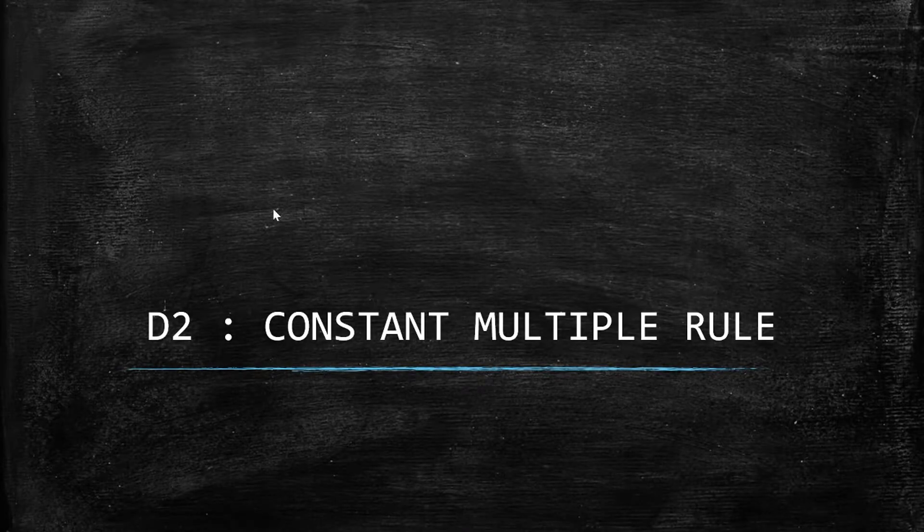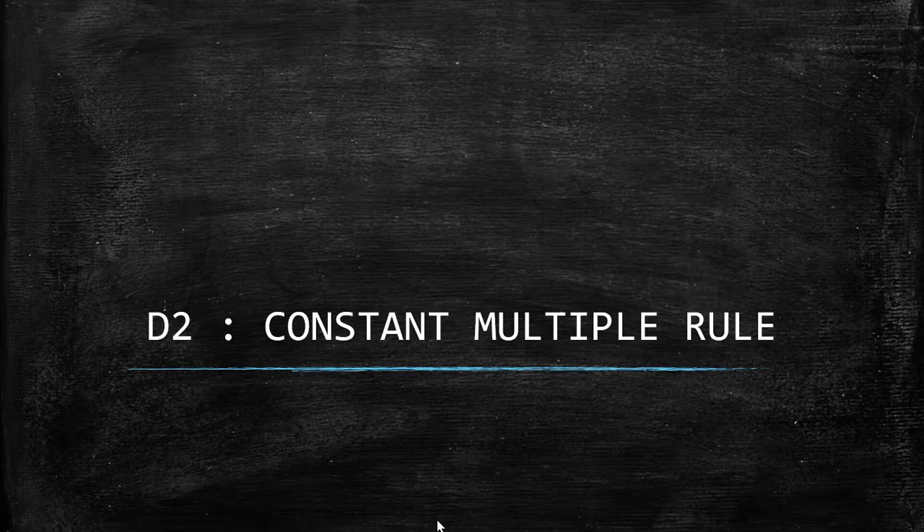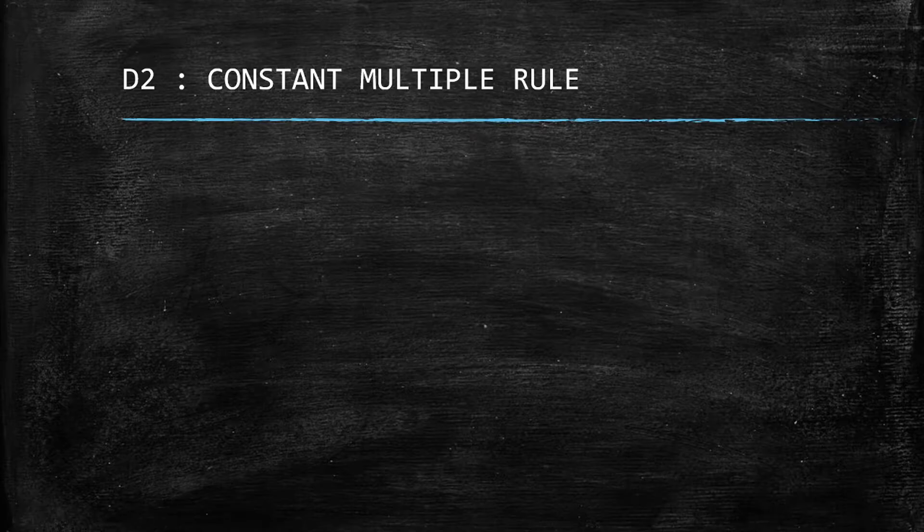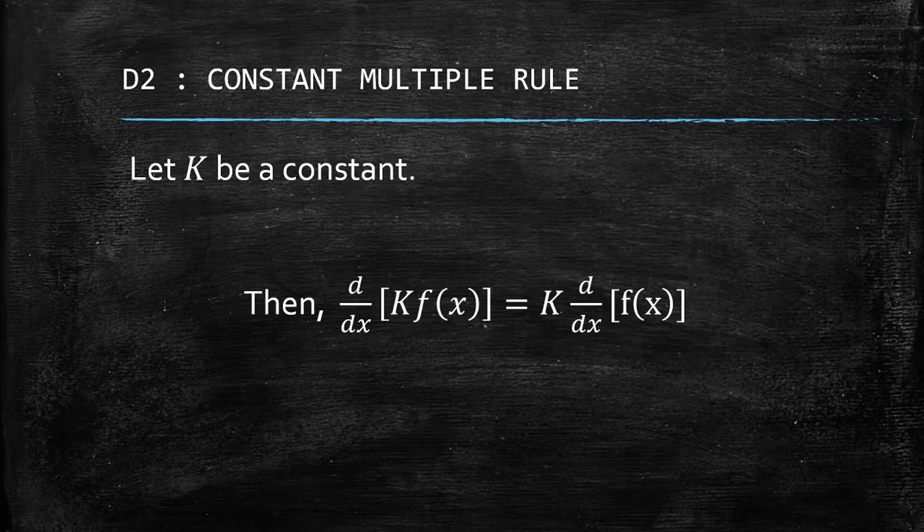We have now D2, the second basic differentiation rule, called the Constant Multiple Rule. What does the Constant Multiple Rule state? Let K be a constant. Then the derivative of the constant times a certain function of x is just the product of K and the derivative of that function.